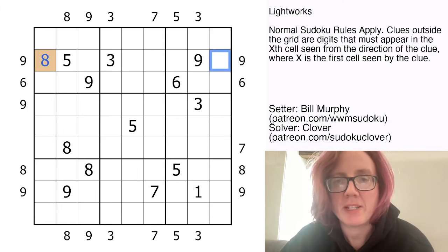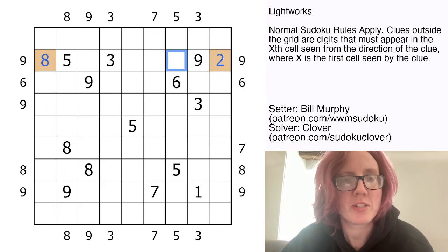And on the right side, right here, this is going to have to tell us where 9 lives in this row. But because the clue is on the right side, we're counting from the right side, so 9 is in the 2nd position, so that's going to be a 2.